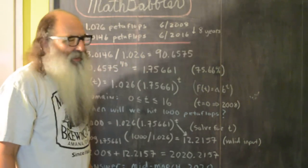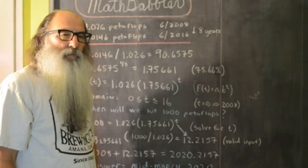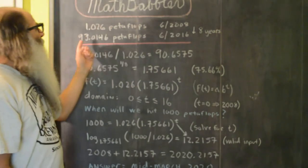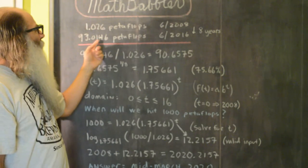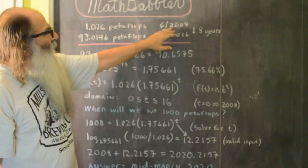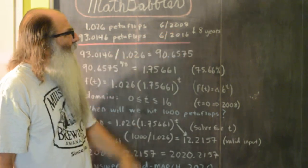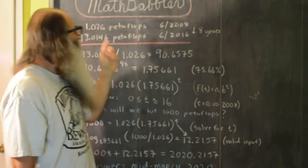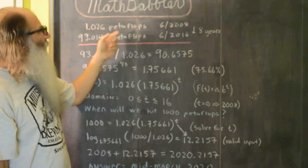June 2016, the number one ranked supercomputer in the world was benchmarked at 93.0146 petaflops. We have to rewind all the way back to June 2008, the number one supercomputer in the world was benchmarked at 1.026 petaflops.